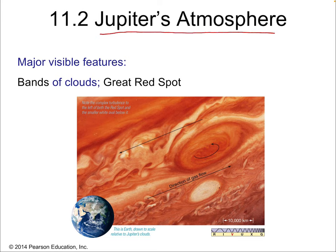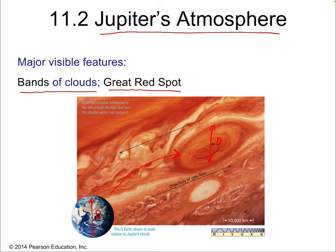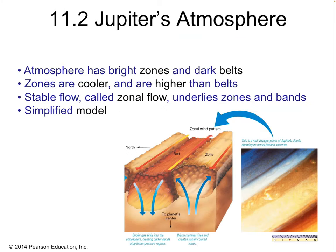Let's talk from the outside in and start with Jupiter's atmosphere. The most visible features are the bands of clouds — you can see them even with a hobby telescope — and the Great Red Spot, which is quite famous. The Great Red Spot is the size of Earth: the diameter of Earth is smaller than the diameter of the Great Red Spot. It's a very dramatic storm that has been going on for centuries or a couple thousand years, certainly far longer than a human lifetime.